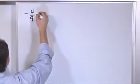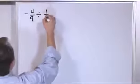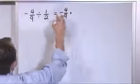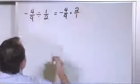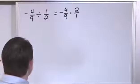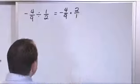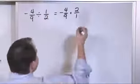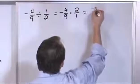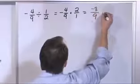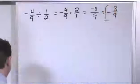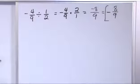Negative 4 ninths divided by 1 half. So we'll take the first fraction, negative 4 ninths, change this to a multiplication, and then flip over the other one: 2 over 1. We look at this and say, can we cancel anything? We have 2 and 9 and 1 and 4 — there's really nothing we can cancel — so we just proceed as usual. Negative 4 times 2 is negative 8, over 9 times 1 is 9. You can bring that negative out in front — sometimes it's easier to see it's a negative fraction. Negative 8 ninths.